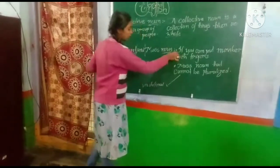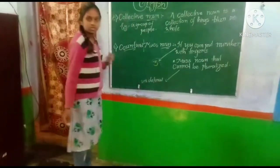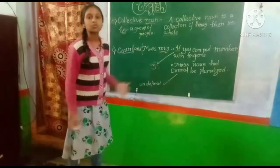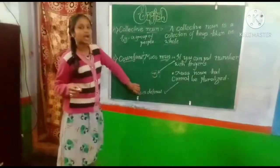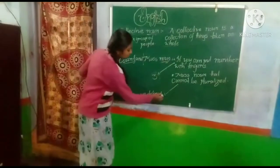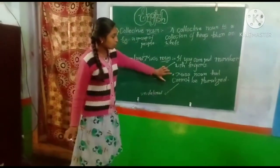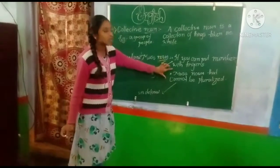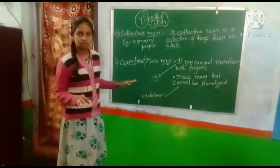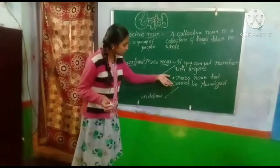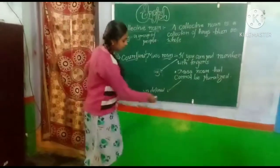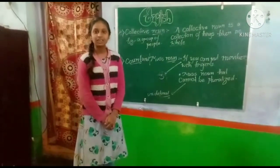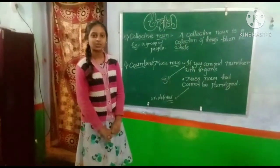For example, a countable noun example is three — numbers which we can count with our fingers. Mass noun examples are undefined, because mass noun means uncountable noun — we cannot count them with fingers or with anything; we can't count. That is called mass noun or uncountable. Thanks for watching this video. Please like, share, and subscribe to the channel. Thank you very much.